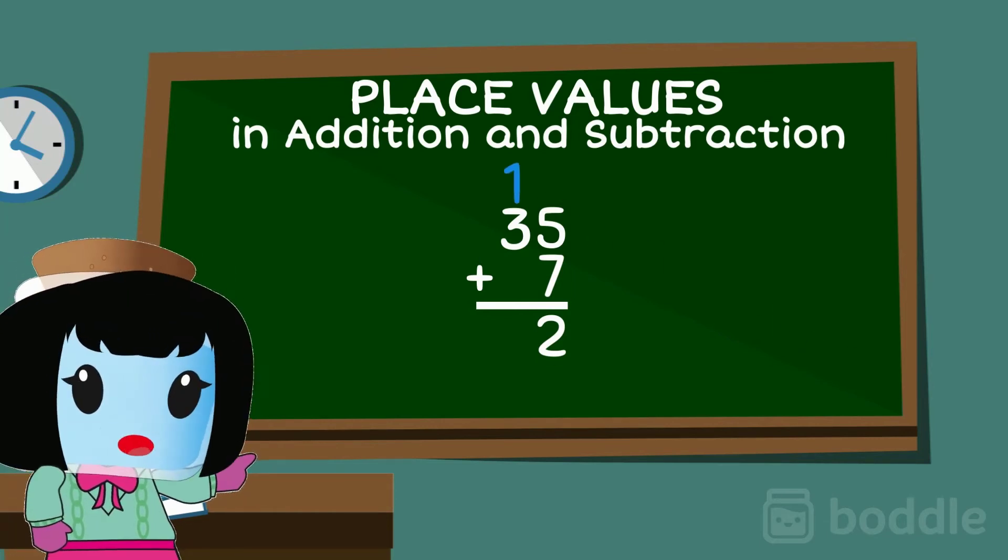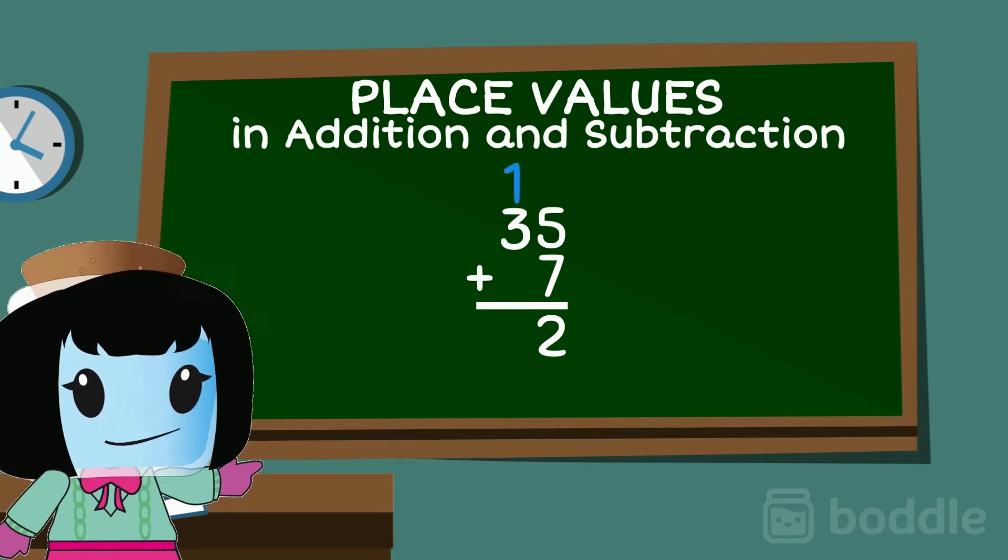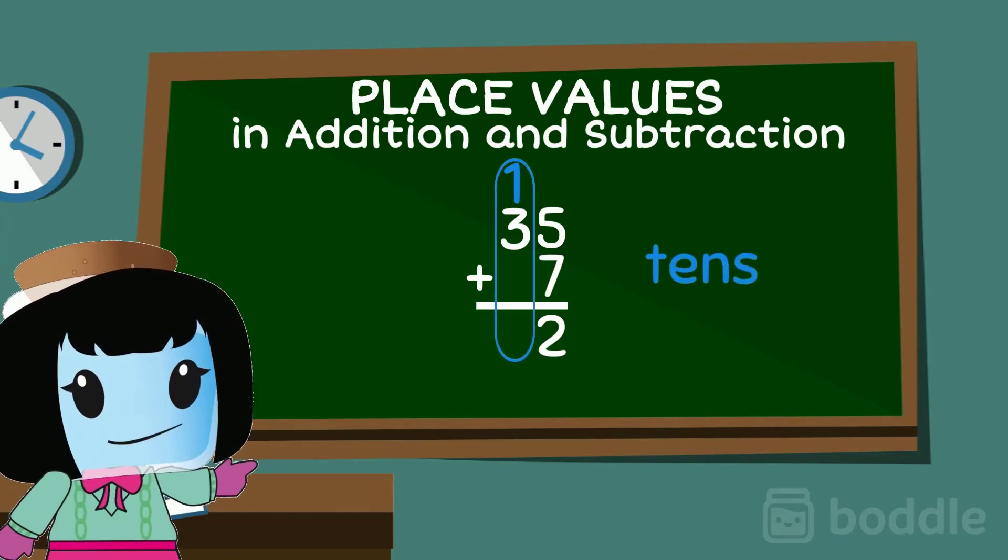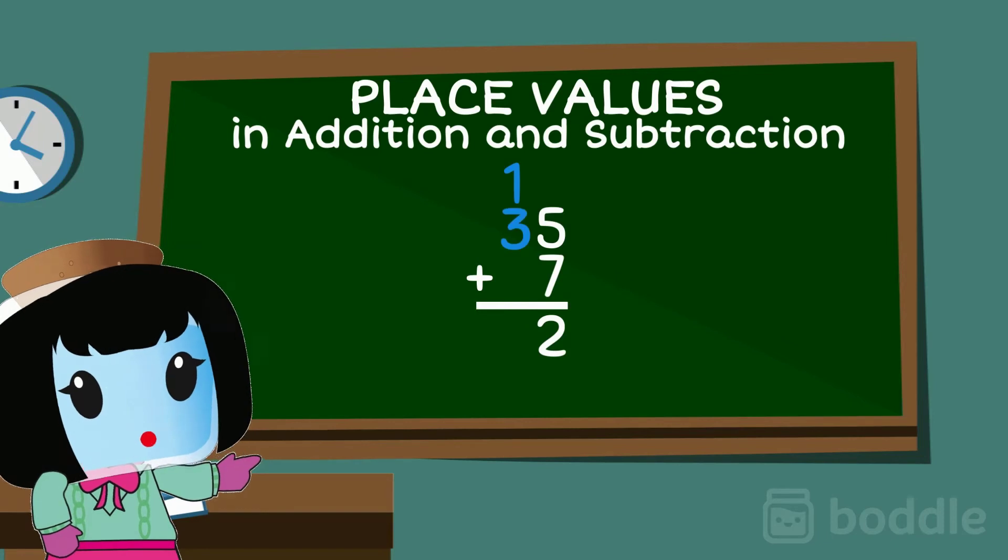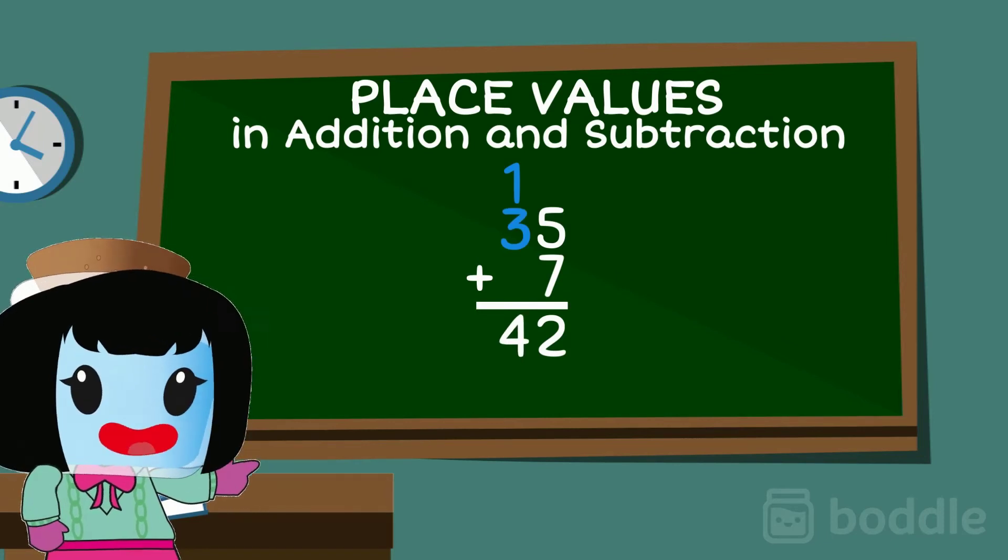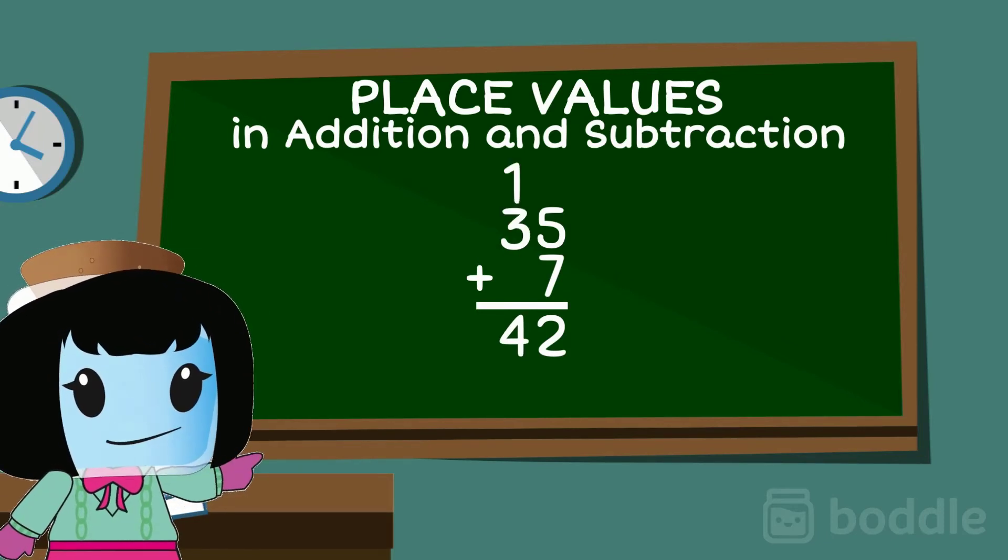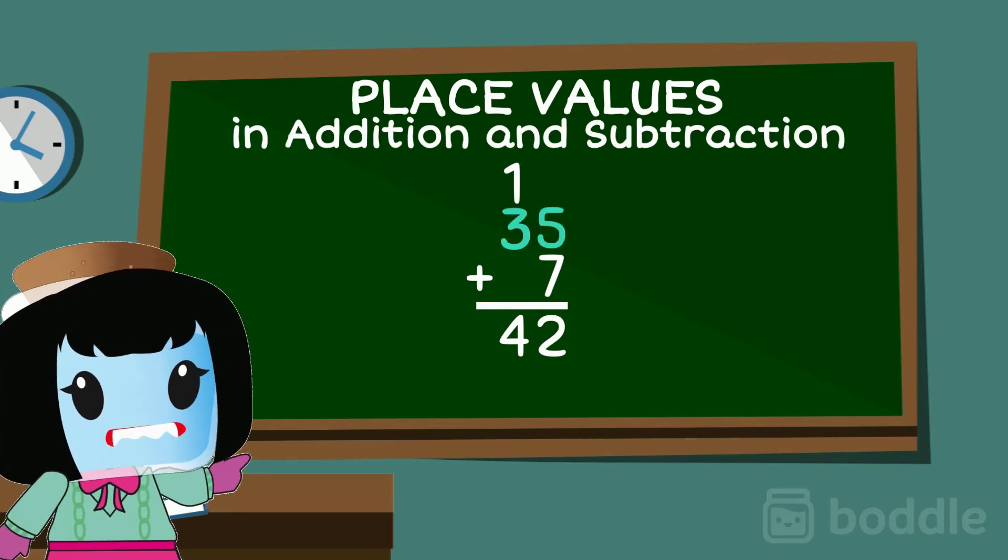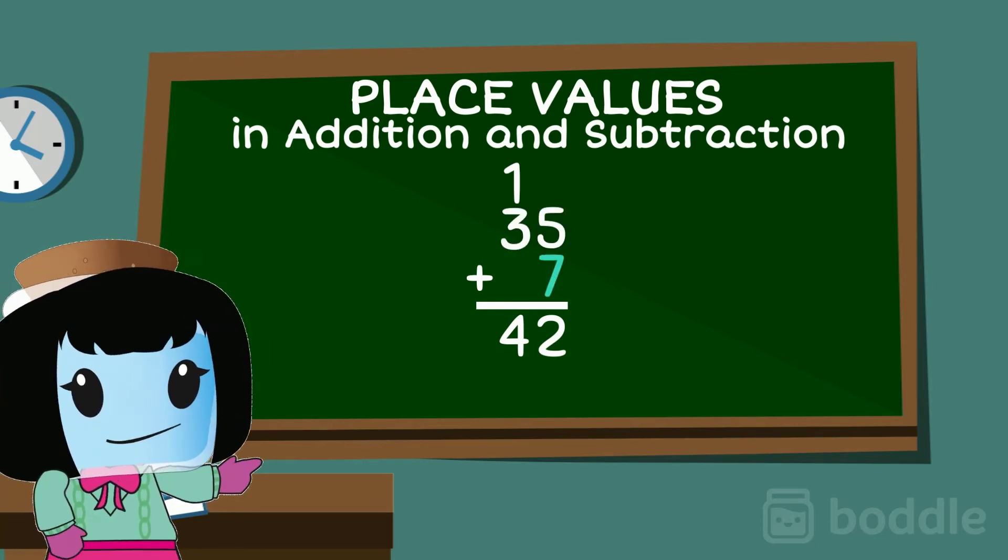Now the 1 goes on top of the 3 because they're in the tens place. 1 plus 3 equals 4. This means that 35 plus 7 equals 42.